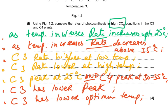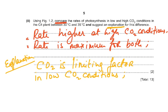Whenever they ask you to compare, use comparative words: lower, higher. 'This is higher than this, this is lower than this.' Then part two: 'Using figure 1.2, compare the rate of photosynthesis in low and high CO2 conditions in the C4 plant between 30 and 35 degrees, and suggest an explanation for the difference.' This is two marks — one for the comparison, one for the explanation.